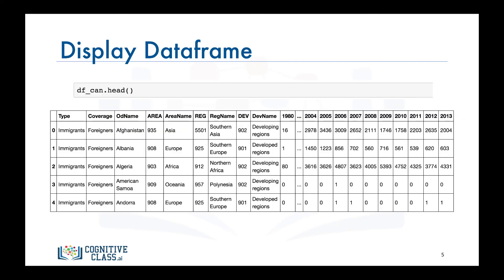As you can see, the output of the head function looks correct, with the columns having the correct labels and each row representing a country and containing the total number of immigrants from that country.